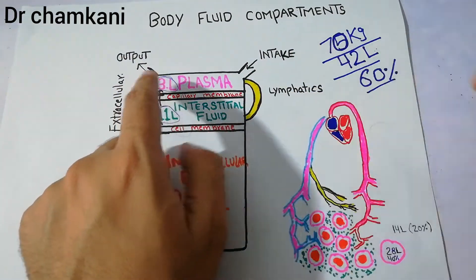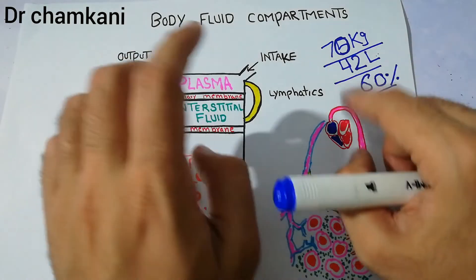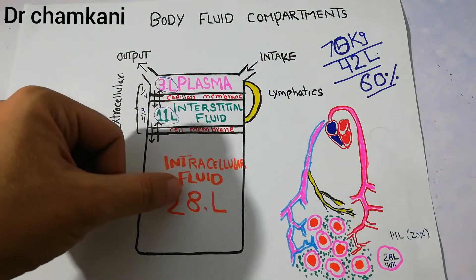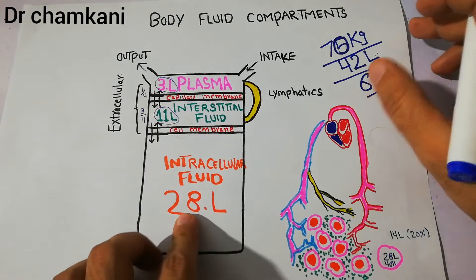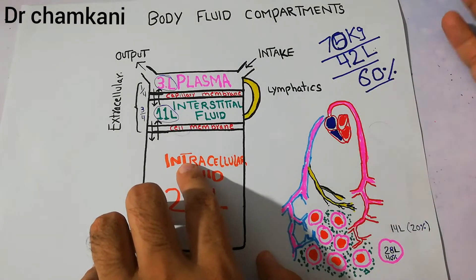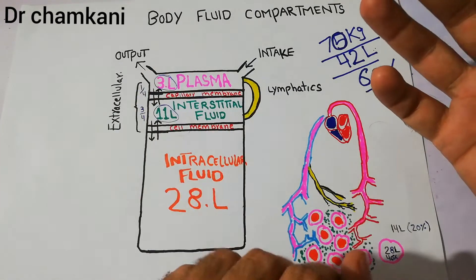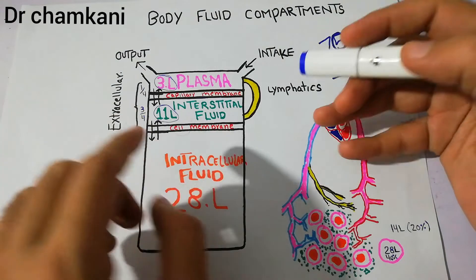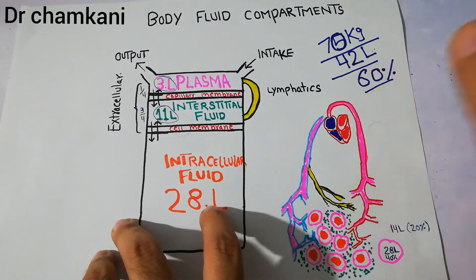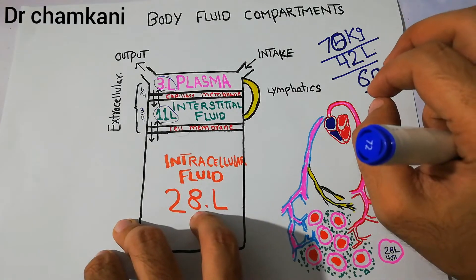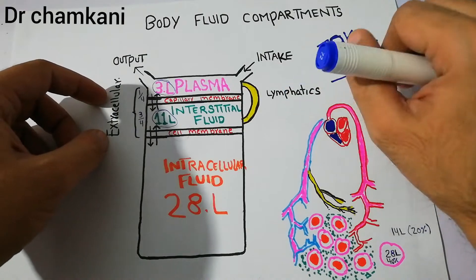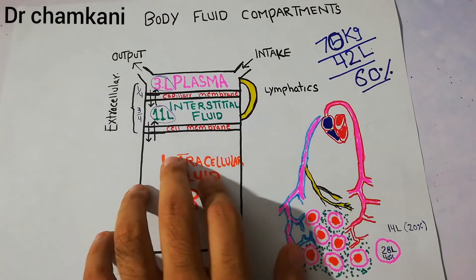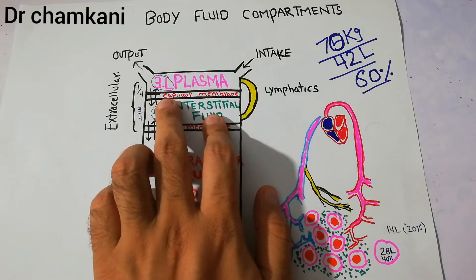The amount of fluid in the body is maintained with the help of the kidneys, and in a normal adult it is around 42 liters. Out of these 42 liters, 28 liters of fluid are present inside the cells — around 40% of body weight — and around 14 liters of fluid is present outside the cells, which is known as the extracellular fluid, making around 20% of body weight.